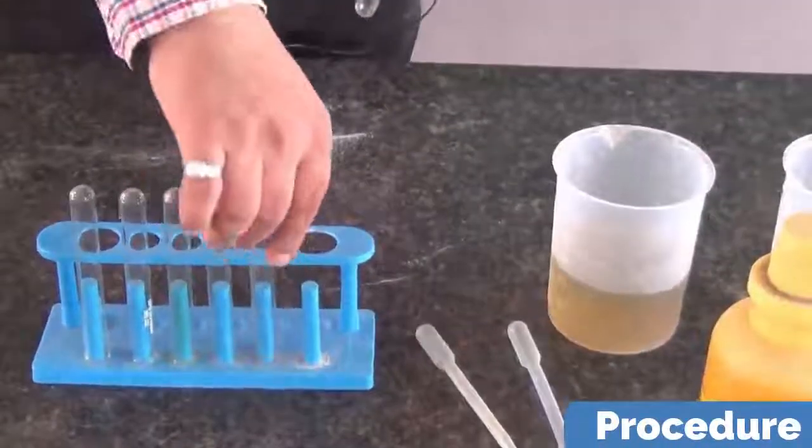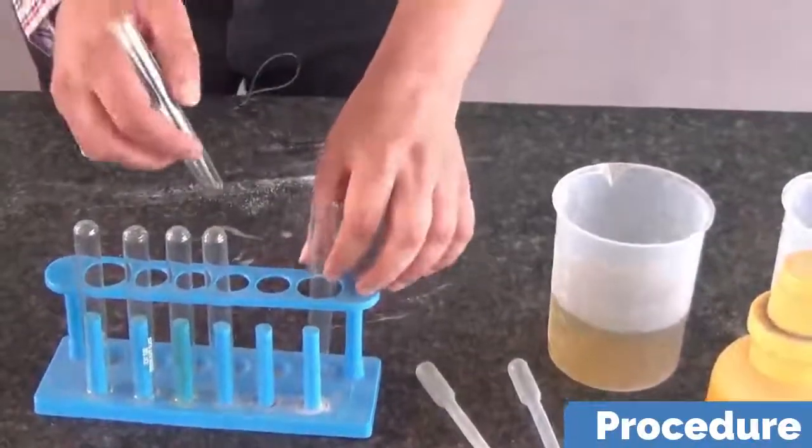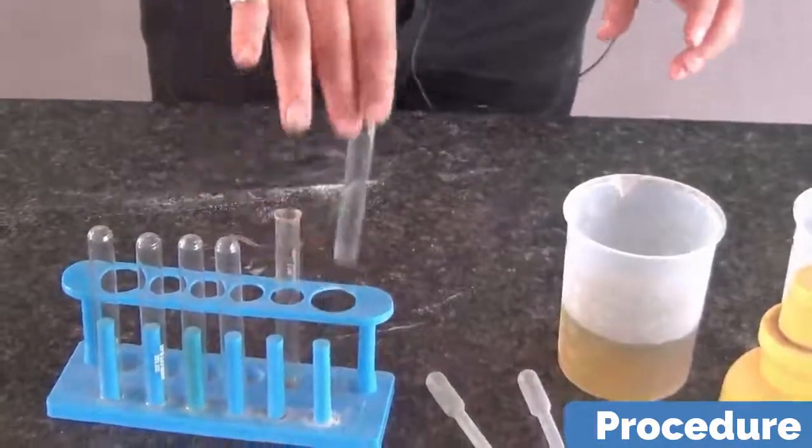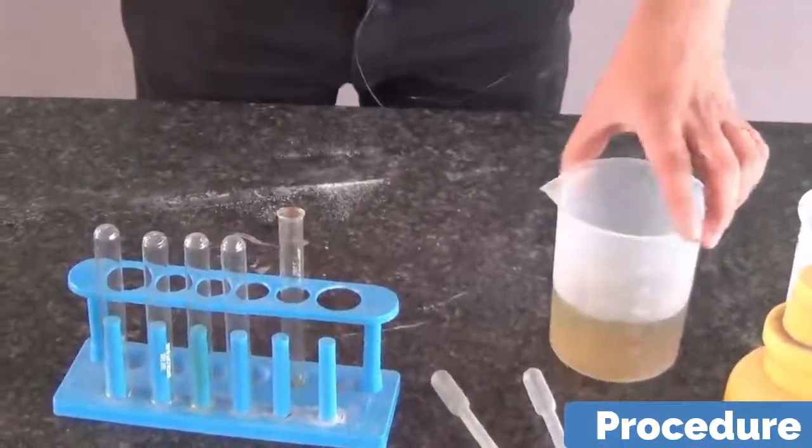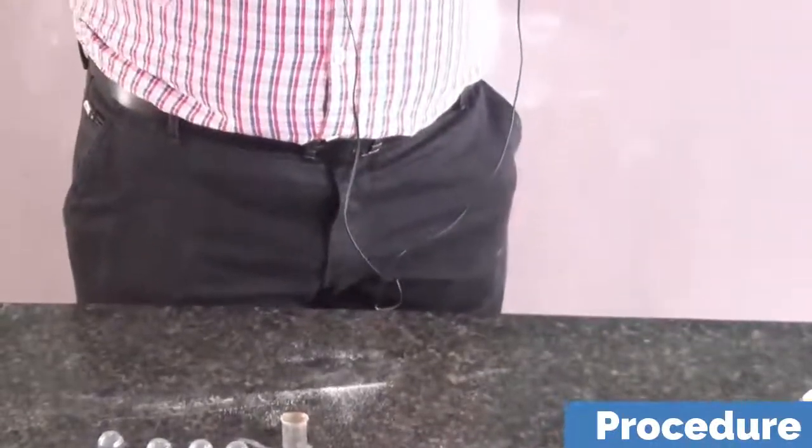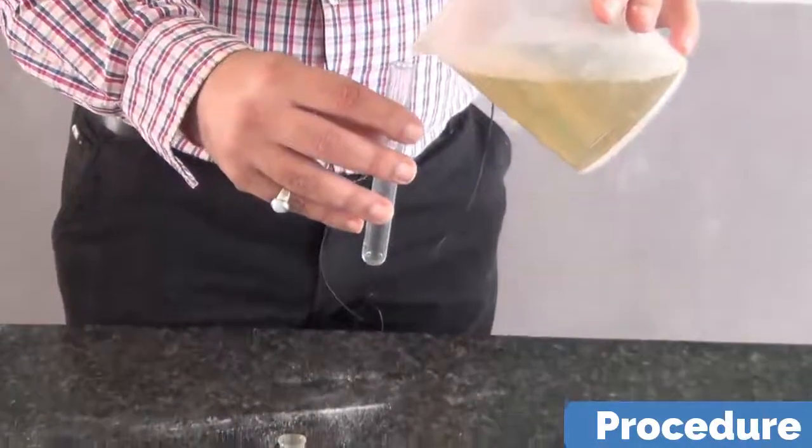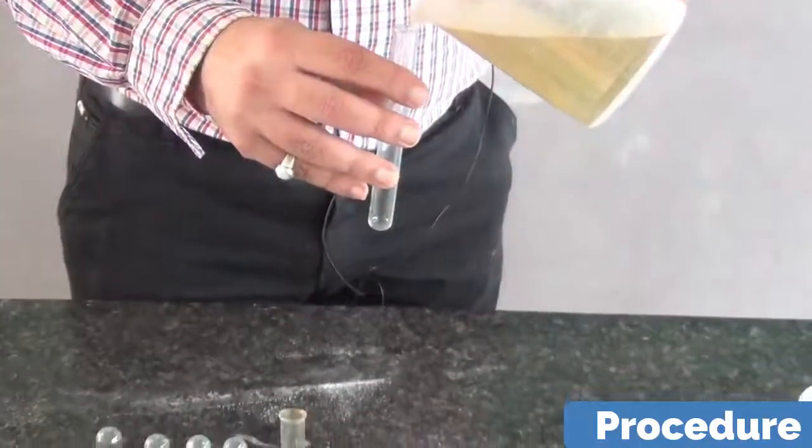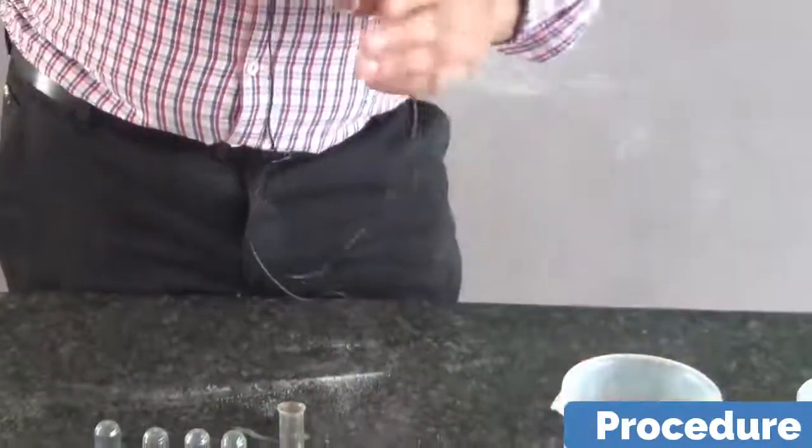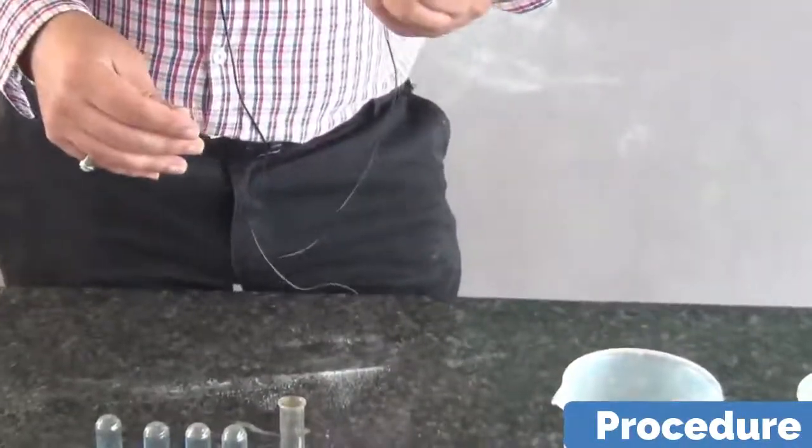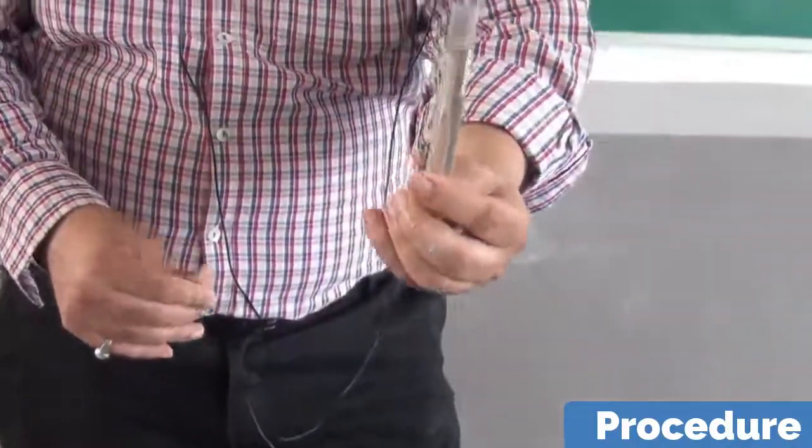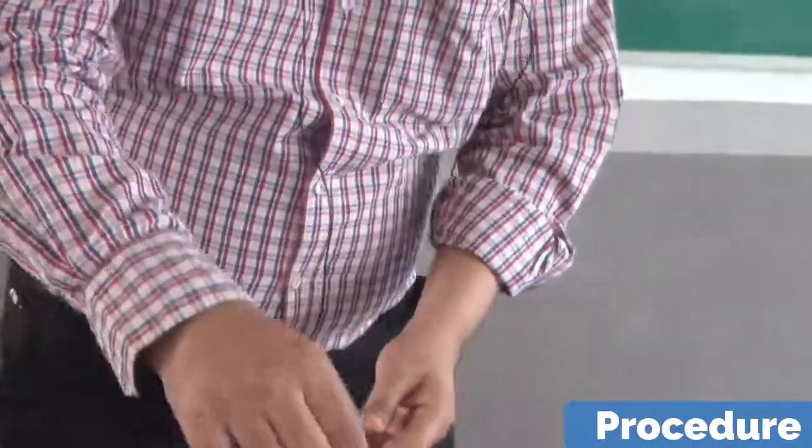We have two test tubes. We will first take two test tubes, place them in a rack, and then we need to add water. This is sample A water which has been collected from pond. Just see the appearance of water, it is yellowish in color. It is stagnant pond water, color is yellowish.